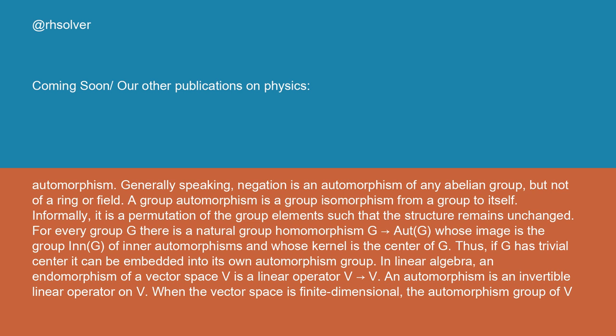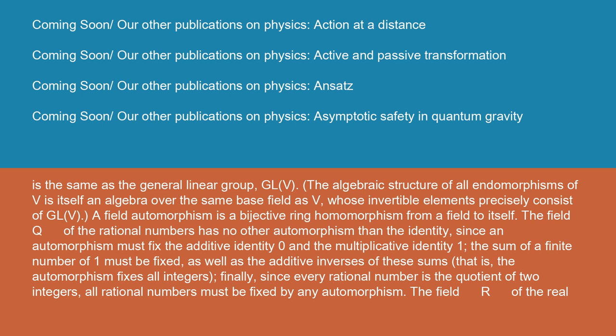In linear algebra, an endomorphism of a vector space V is a linear operator V→V. An automorphism is an invertible linear operator on V. When the vector space is finite-dimensional, the automorphism group of V is the same as the general linear group GL(V). The algebraic structure of all endomorphisms of V is itself an algebra over the same base field as V, whose invertible elements precisely consist of GL(V).